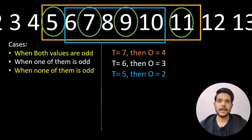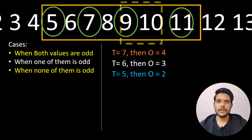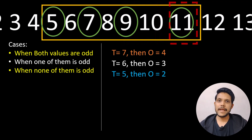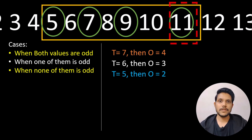The first case is where both values are odd, and the case where none of the two values are odd. When both values are odd, applying the same window logic, at the very end we cannot fit a complete window of two since the total number of values is odd. We know the last value is an odd value, so the total number of odd values will be total divided by two, plus one.